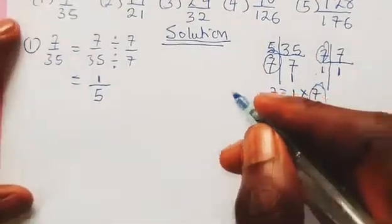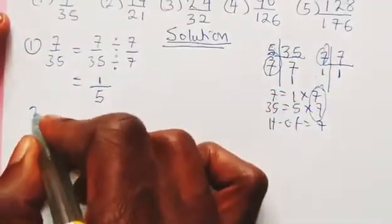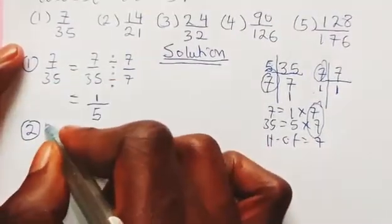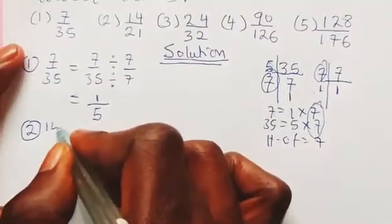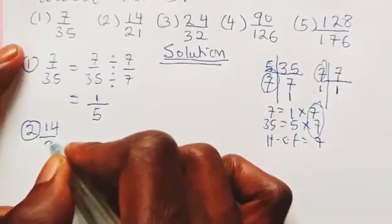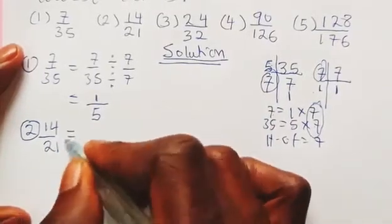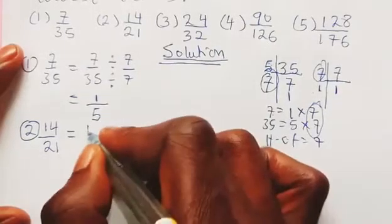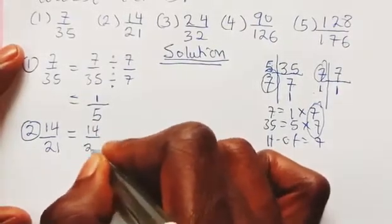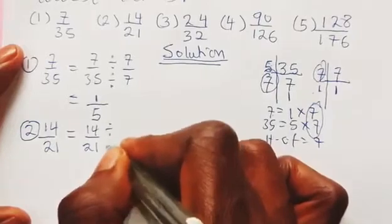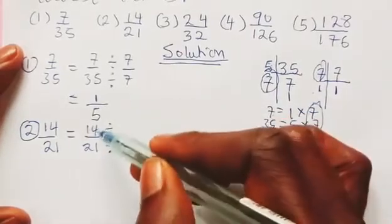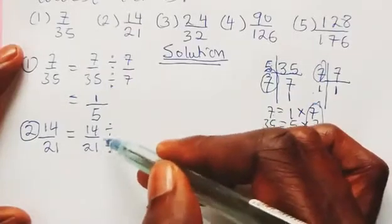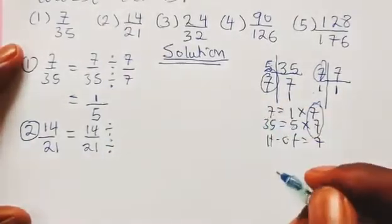Now let us take the second example. In this second example, we have 14 divided by 21 — we are reducing 14/21 to its simplest form. Like we did in the first example, we put 14 over 21 and look for the highest common factor between 14 and 21 so we can use it to divide both numbers.